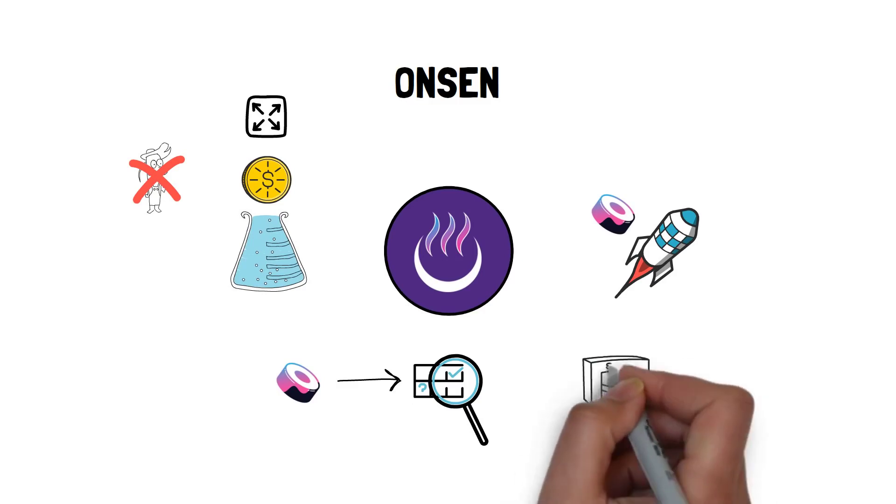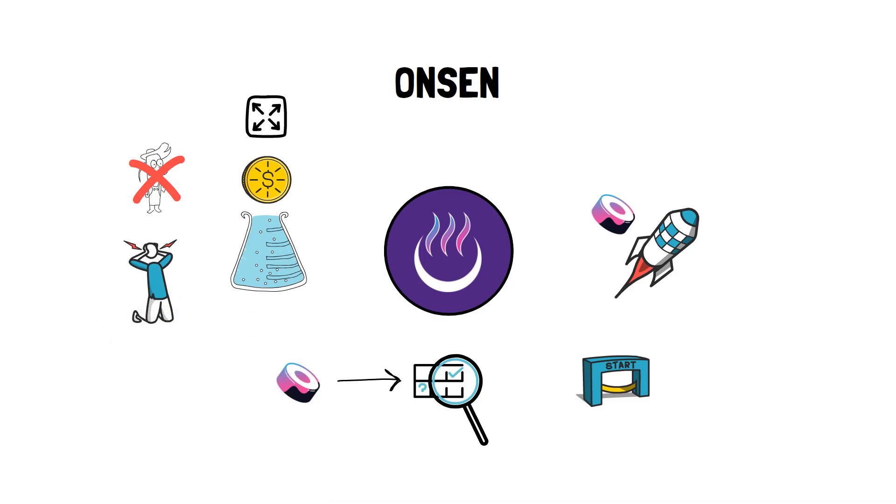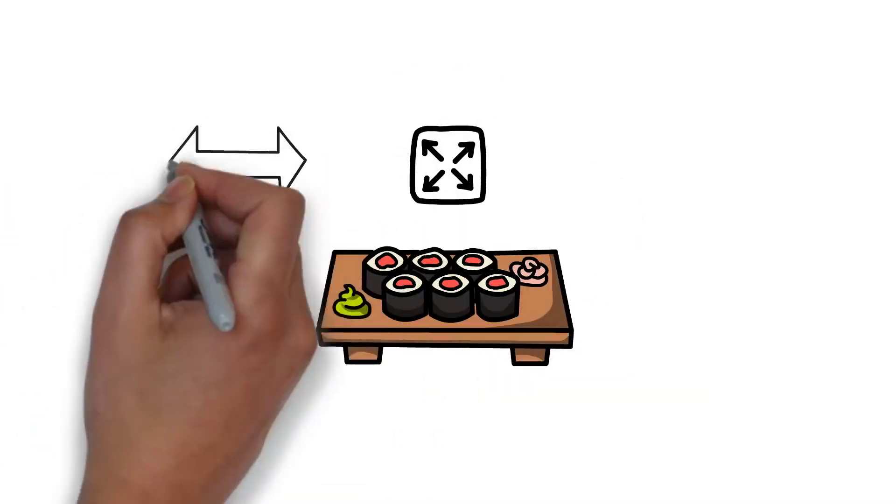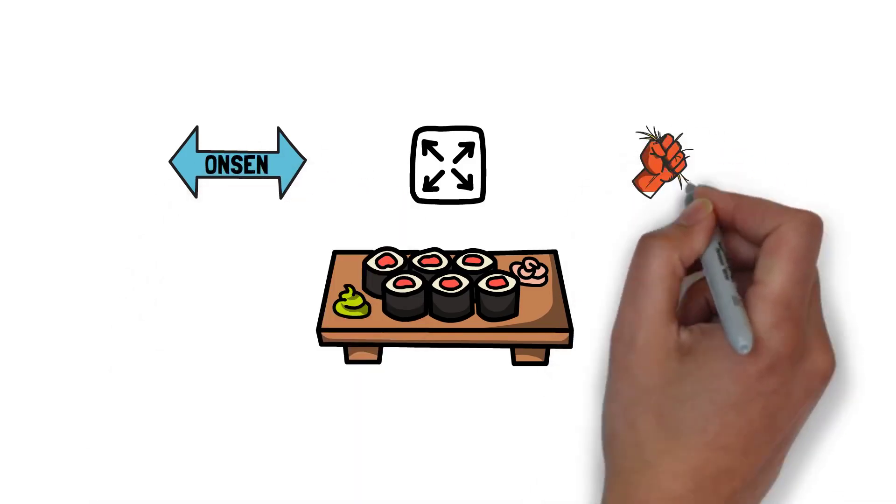This is really useful for new projects that very often struggle to bootstrap liquidity, especially if they don't want to initially distribute large amounts of their own tokens. Onsen also benefits the overall Sushi ecosystem as the swap fees from the Onsen enabled liquidity pools are distributed to the ex-Sushi holders.